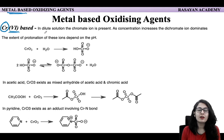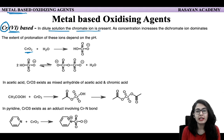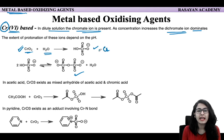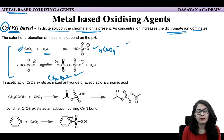So first, chromium(VI)-based oxidizing agents. If you are adding chromium trioxide (CrO₃) in dilute solution, the chromate ion is present. When we take CrO₃ in water, it forms the chromate ion (CrHCrO₄⁻). As concentration increases, the dichromate ion (Cr₂O₇²⁻) is going to dominate — that is, it dimerizes basically. So this is an equilibrium you have to take care of whenever you mix chromium trioxide with water, giving both of these species.